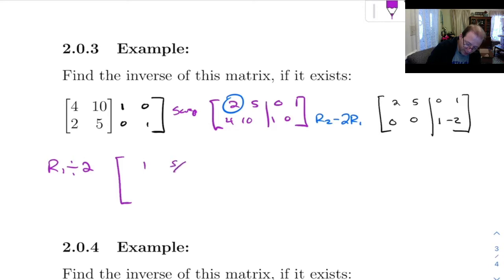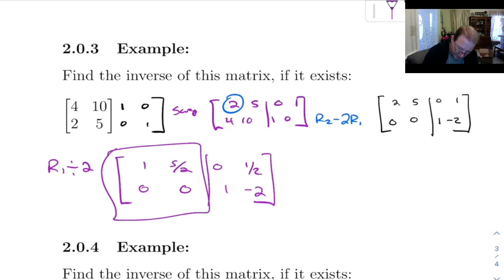That would give you 1, 5 halves, 0, 1 half, and then 0, 0, 1, negative 2. So this is in reduced row echelon form, but this over here is not an identity. So this tells us that it does not exist.